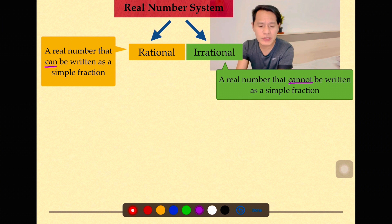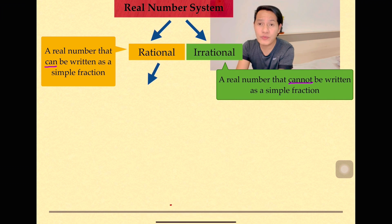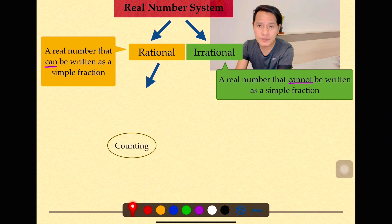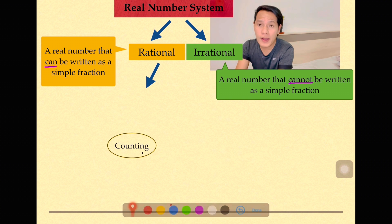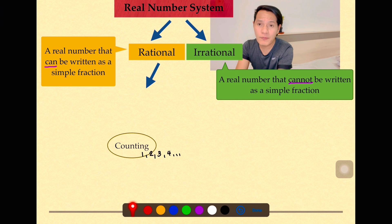When we say rational numbers, there are so many about this. To start with, are you familiar with counting numbers? When you count, you start with 1, 2, 3, 4. Another term for counting numbers is what we call natural numbers. So natural numbers are counting numbers, and normally when you say counting numbers, you start with 1.